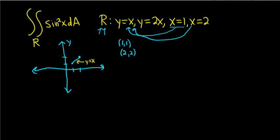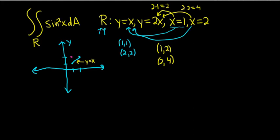Now we're going to do the same thing with the other function. Take x equals 1 and plug it in: 2 times 1 gives 2, so the point is (1, 2). Do the same with 2: 2 times 2 gives 4, so the point is (2, 4). Connecting those dots gives the line y equals 2x. Then you have the vertical line x equals 1 and the vertical line x equals 2.